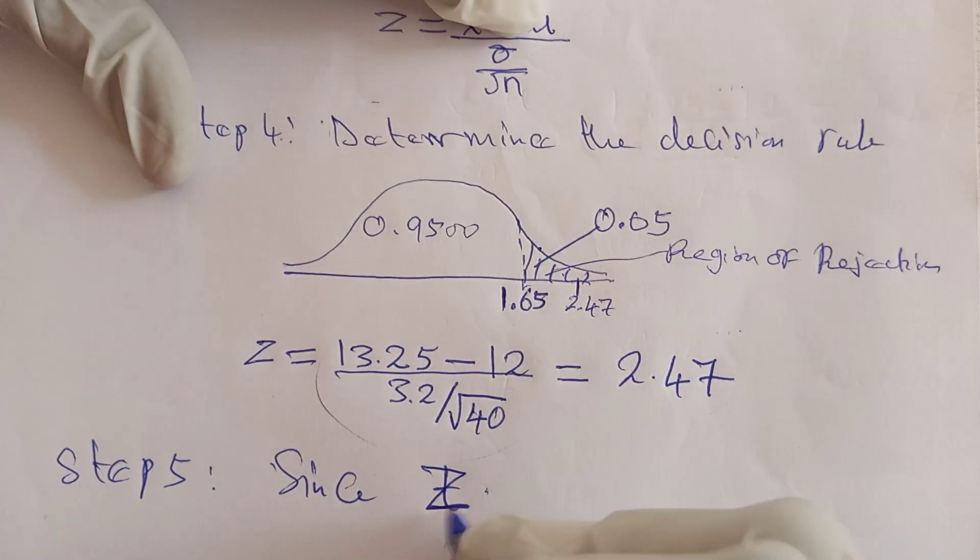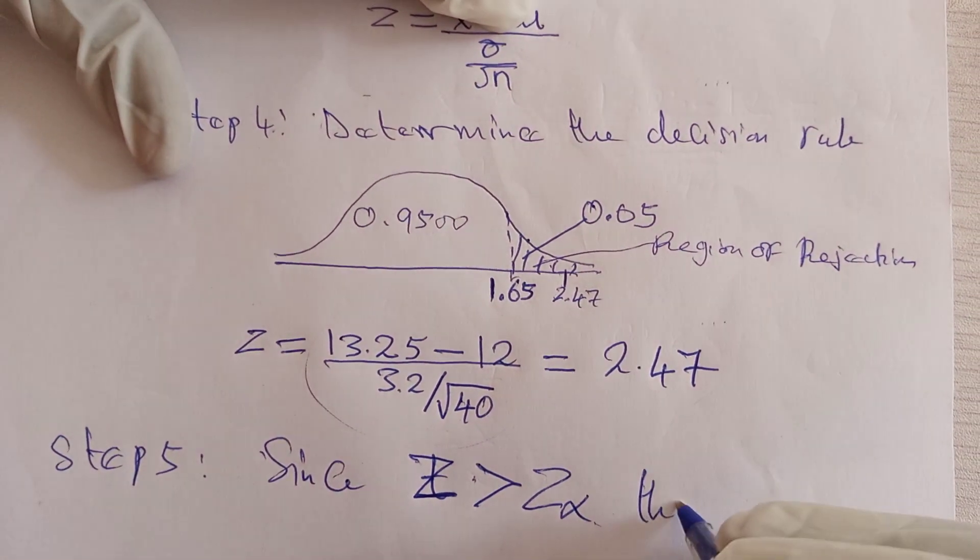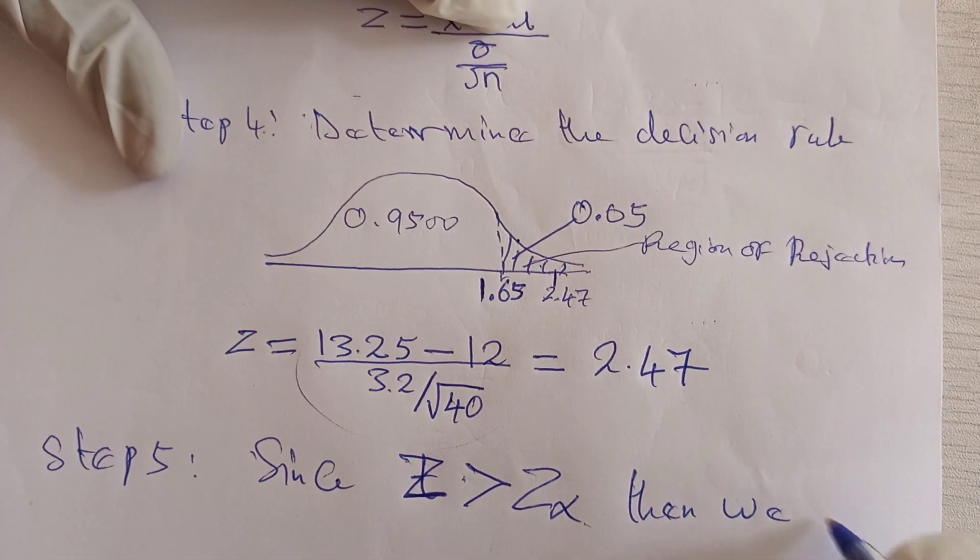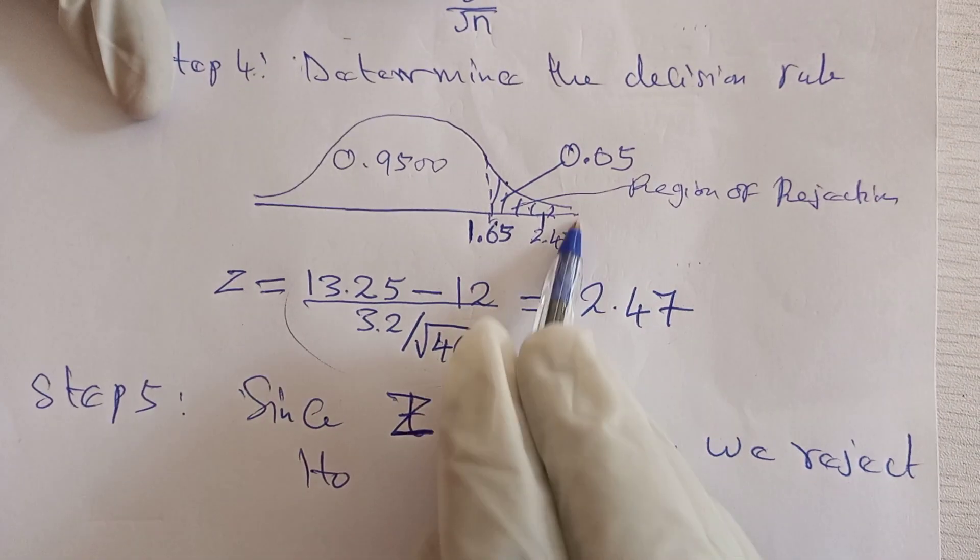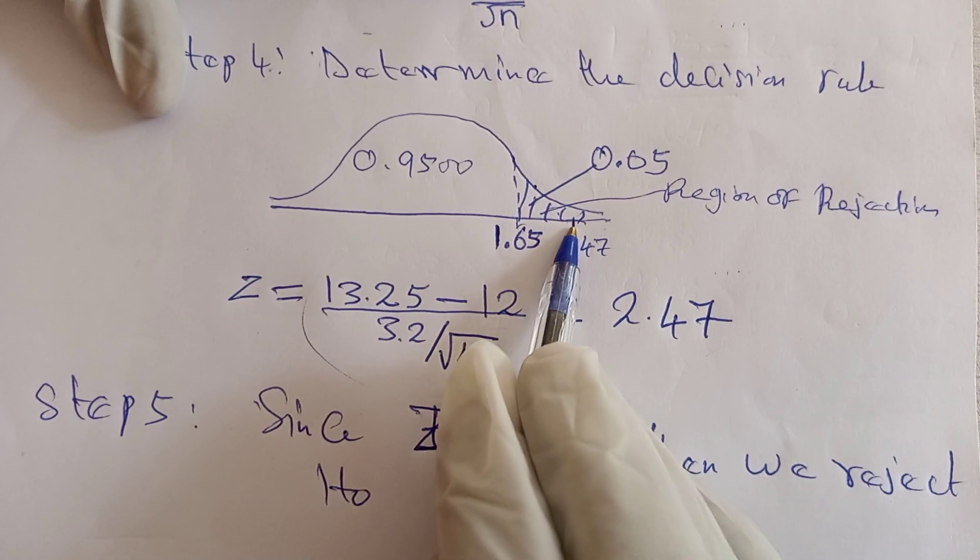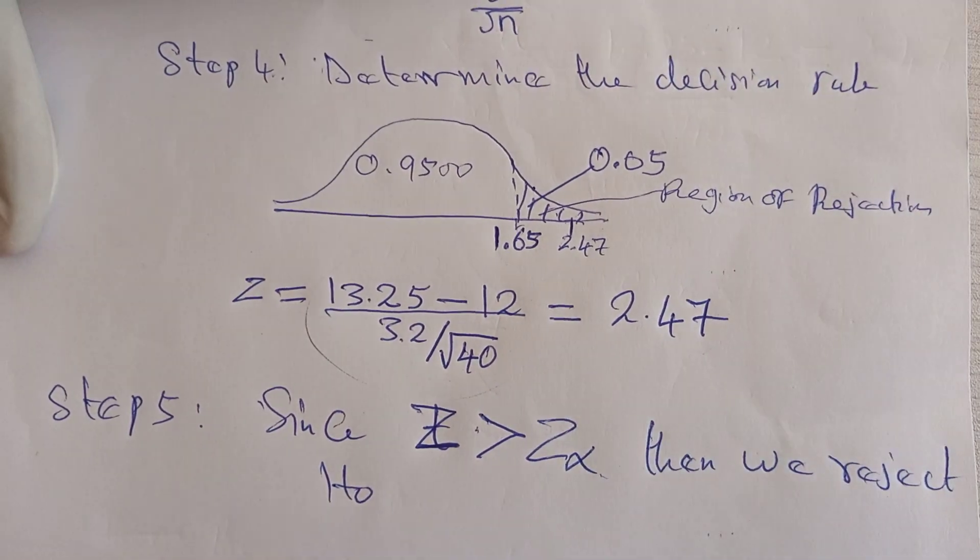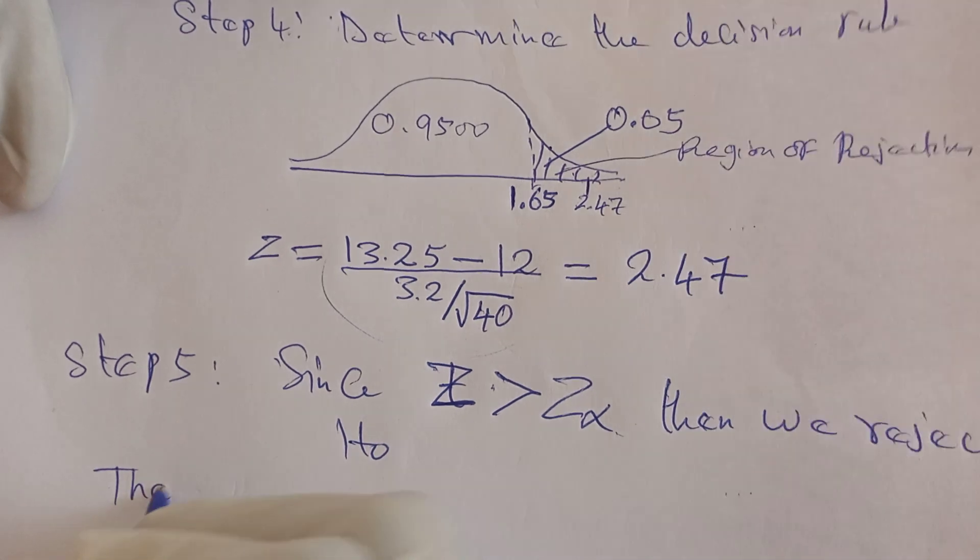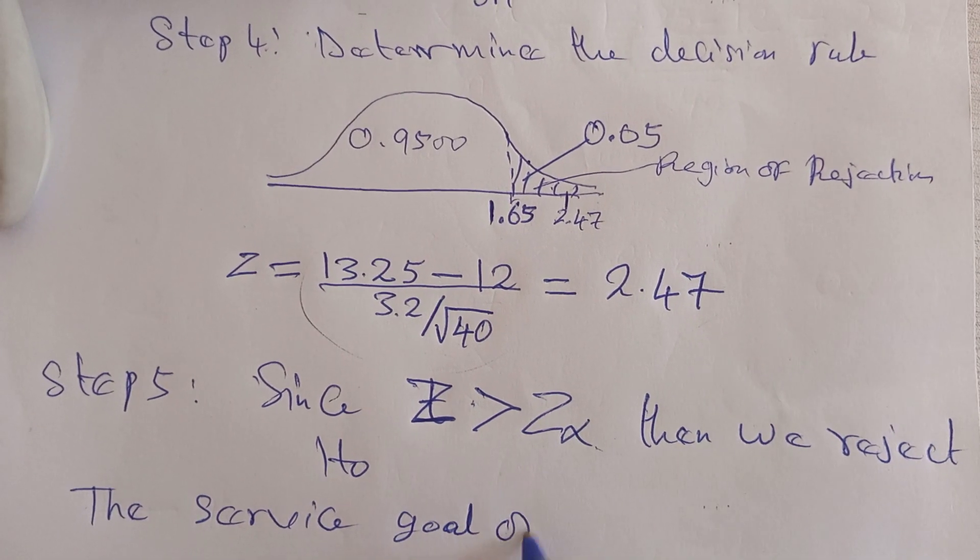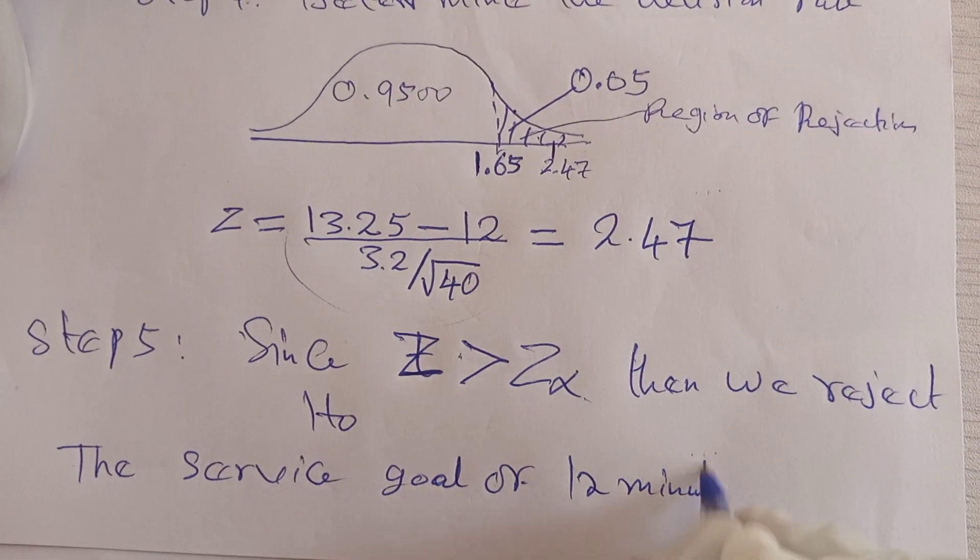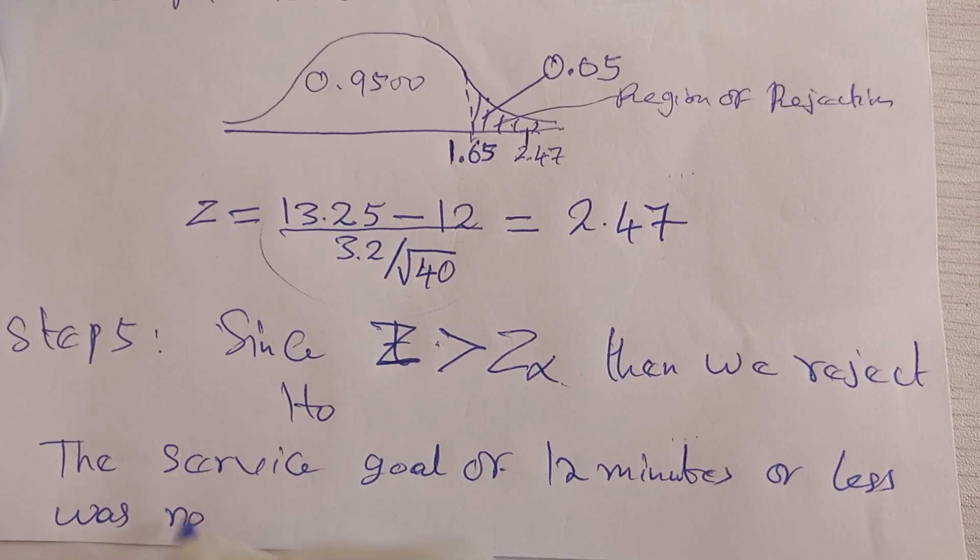Since the computed Z is greater than the critical Z value, we reject H₀. The computed Z falls in the region of rejection, so we are rejecting the null hypothesis.